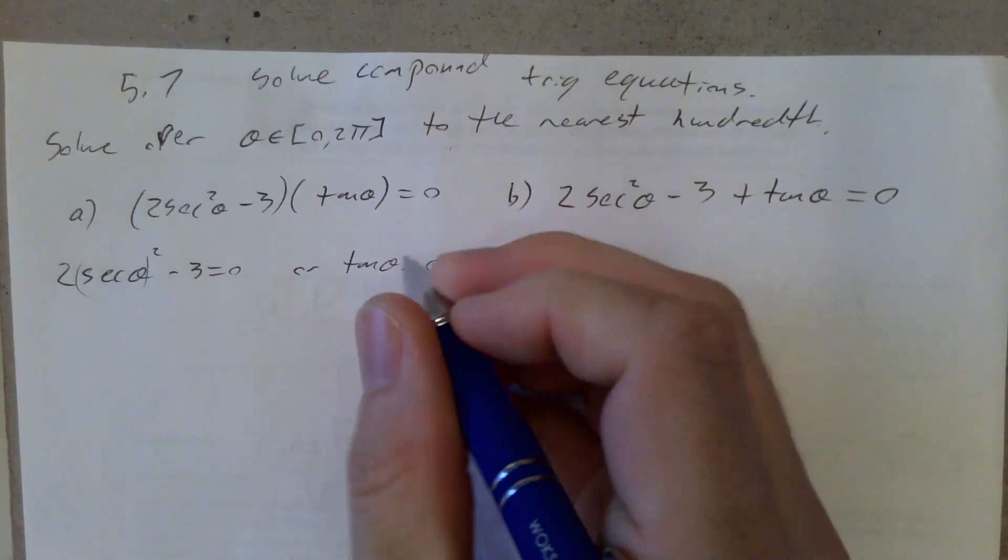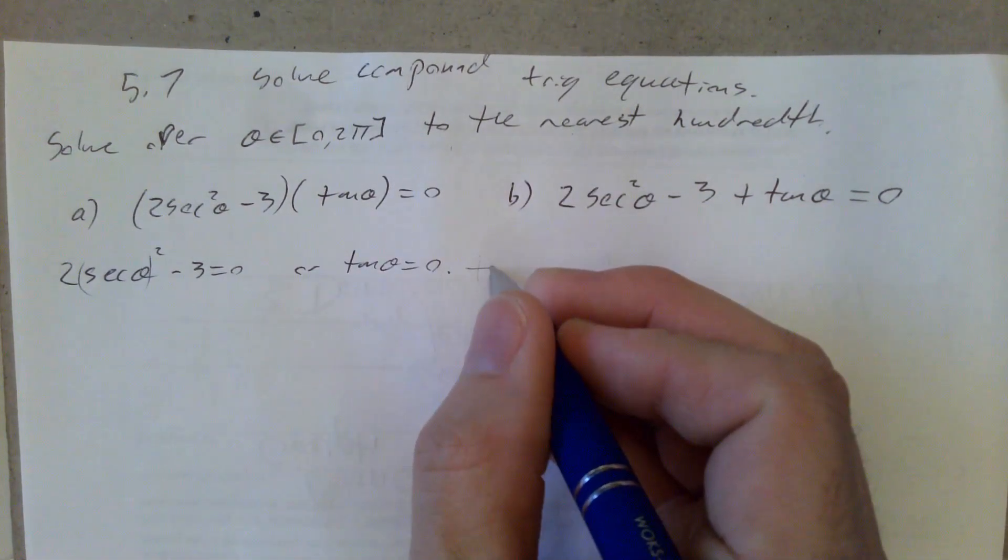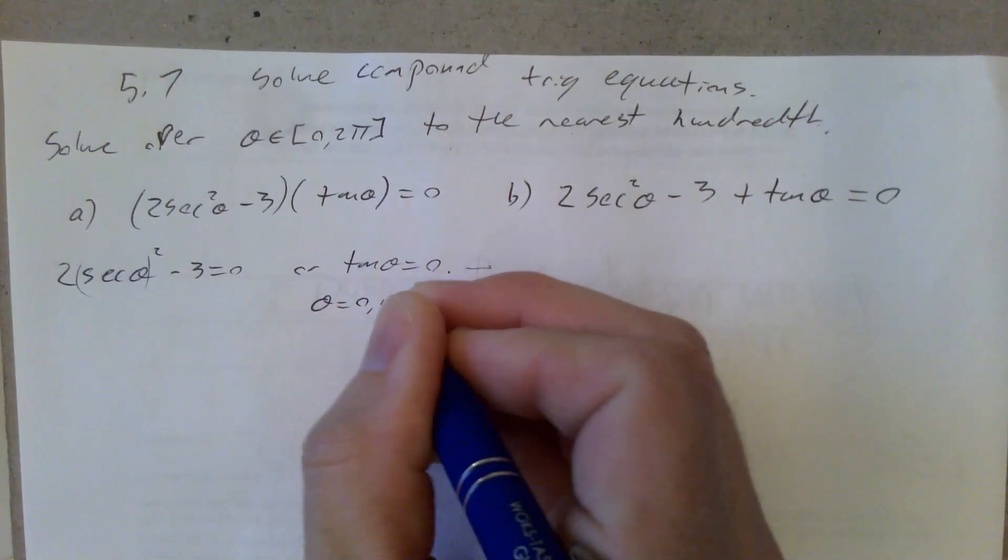I know when the tangent of theta is equal to 0 from 0 to 2π. If I use my x, y, r definition, that happens when y is equal to 0, which happens at 0, π, and 2π.